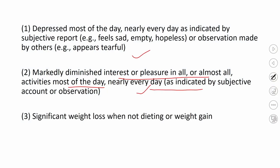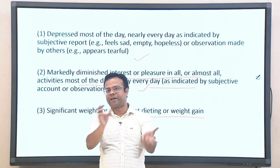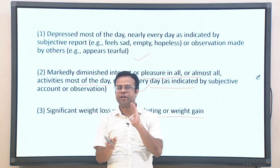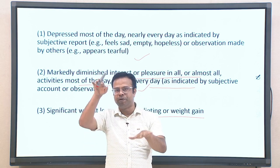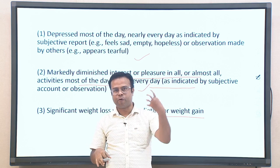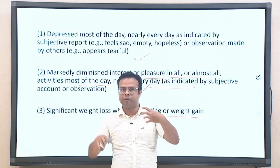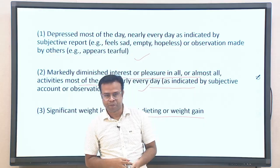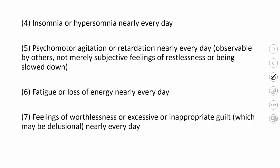The third symptom is significant weight loss when not dieting, or weight gain — both opposite ends of the spectrum can occur. Fourth is insomnia or hypersomnia nearly every day — either inability to sleep or sleeping too much. Both extremes can manifest in depression.